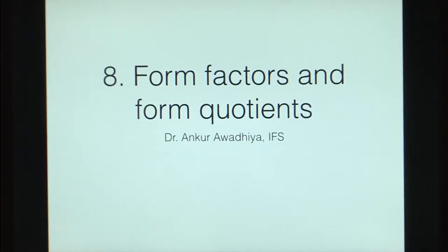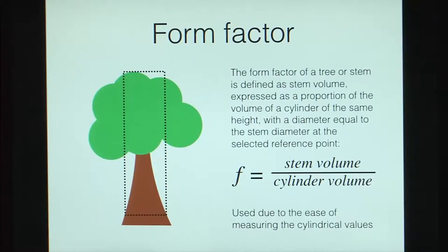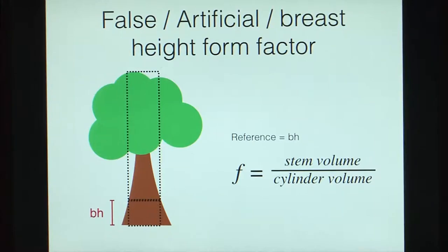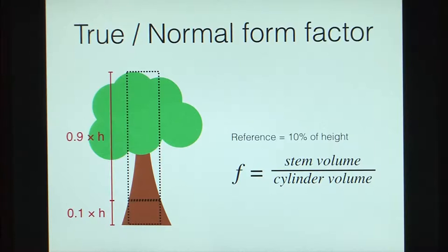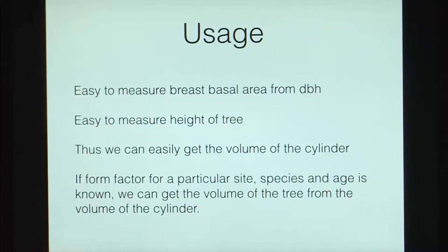Next, we looked at form factors and form quotients. Form factor is a summary of tree shape, defined as the volume of the tree divided by the volume of a cylinder. We examined three types: the absolute form factor (reference at the base of the tree), the artificial or false form factor — the most commonly used, also called the breast height form factor (reference at breast height cross section) — and the true or normal form factor (reference at a percentage of the height). The utility is that we can measure breast basal area from DBH, measure tree height, get the cylinder volume, and with the form factor derive the volume of the tree.